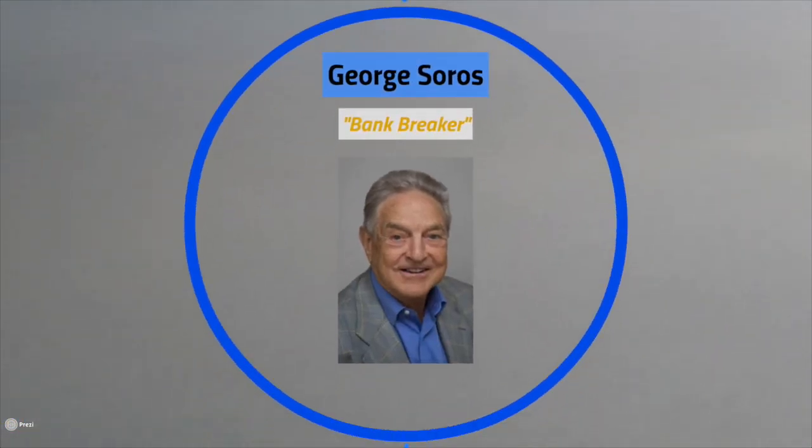Moving on to our second global macro icon is George Soros, best known as the co-founder of the Quantum Fund with Jim Rogers and Stanley Druckenmiller. Soros is known as the guy who broke the Bank of England by putting on a short position worth billions on a day known as Black Wednesday. He's known for putting on large trades that seek to exploit changes in central bank policy, global interest rates, GDP growth, and inflation.